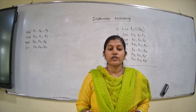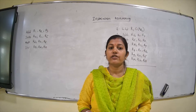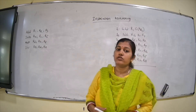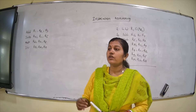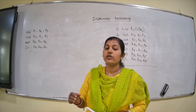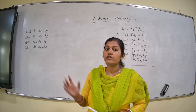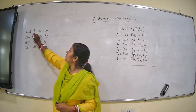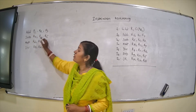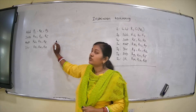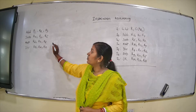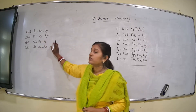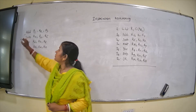We discussed the third solution for the data hazard, which is instruction reordering. In this process, we just reorder the instructions to remove the stall. The simple idea is that independent instructions are placed between two instructions where the stalls occur. We can put multiply and division instructions in between, since those registers are independent.